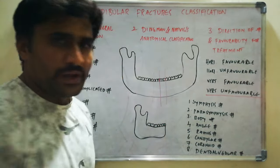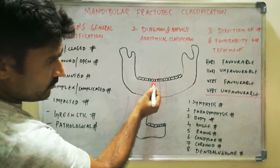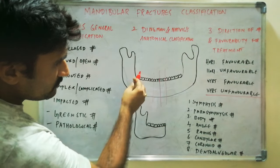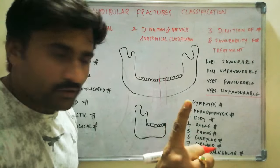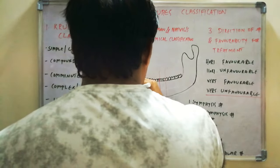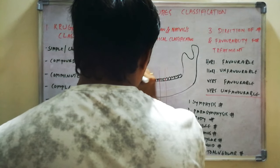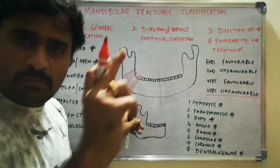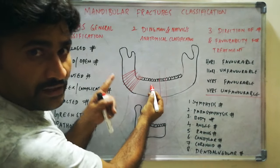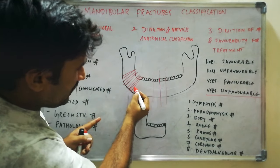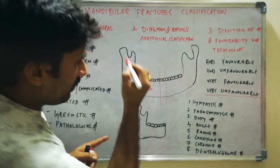The mandibular body is the region distal to the vertical line at the canine, extending to the anterior border of the ramus, and anteriorly up to the anterior border of the masseter muscle. As shown in the diagram, the complete area from this vertical line at the canine to the anterior border of the ramus is called the mandibular body.